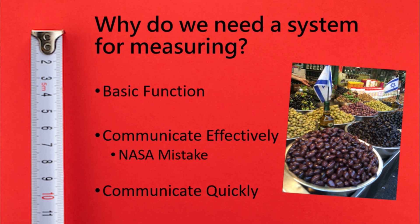Now why do we need a system for measuring? The first reason is for basic function. Even when I go to the grocery store, I know what units are going to be there when purchasing cereal or milk. The same thing is with being able to communicate effectively. If we have the same language, we could do so quickly and we don't have to make mistakes. NASA ran into this problem once with one of their satellites — using the wrong units, they ended up crashing a satellite and were not successful on that mission.